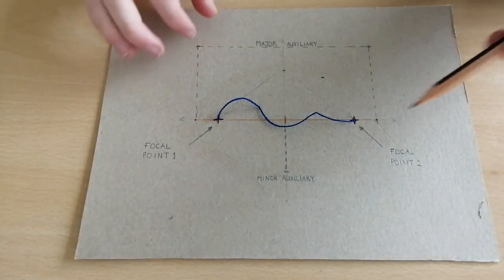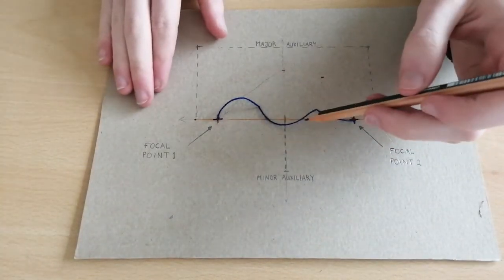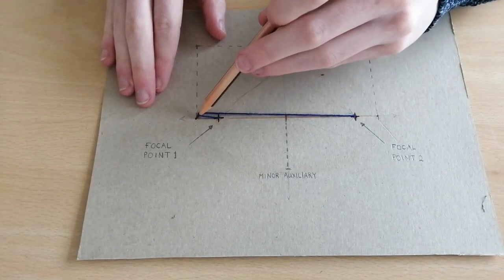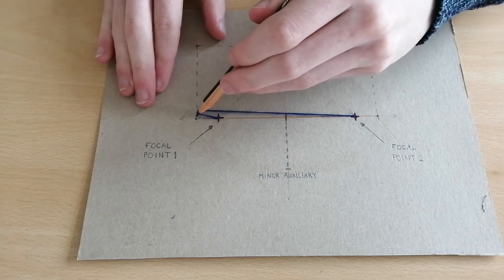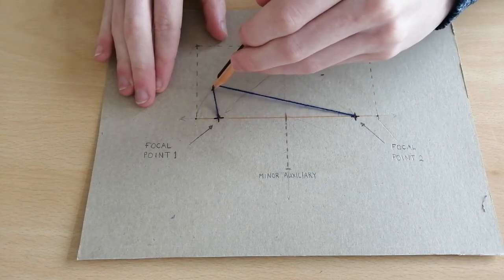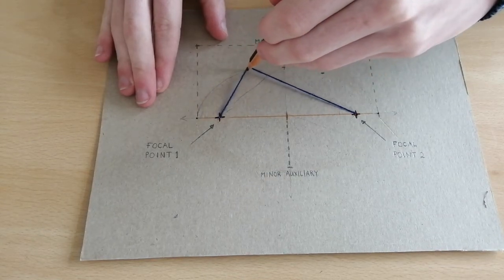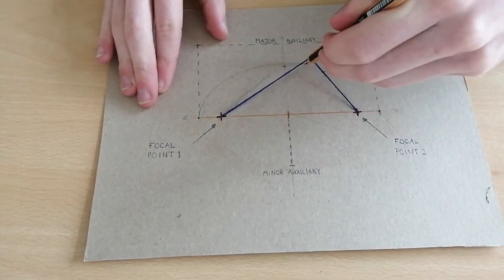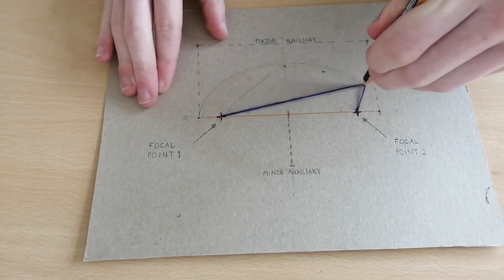Now the way in which we draw our ellipse using the pin and string method is that we take our pencil and we spin it around from our major auxiliary all the way around to our minor, and bring this the entire way around.